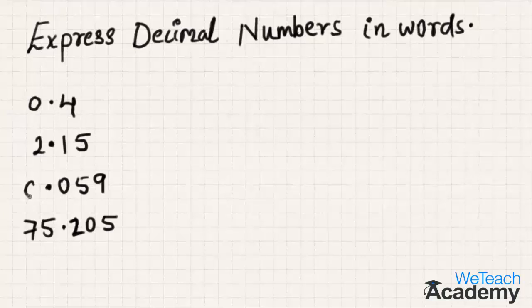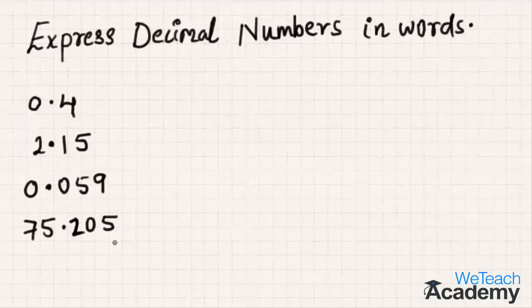In the first example we have one decimal place, in the second we have two decimal places, and the third and fourth have three decimal places. Now let us express them in words.